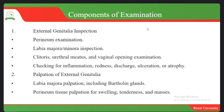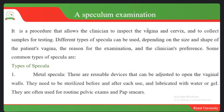After inspection, proceed to palpation of the external genitalia. Palpate the labia majora and also the Bartholin's glands. Sometimes patients have Bartholin's gland inflammation where they form an abscess, which may need to be incised to drain the pus. Also perform perineum tissue palpation — check the perineum for any swellings, tenderness, or masses, and determine whether it is painful and the nature of any mass found.